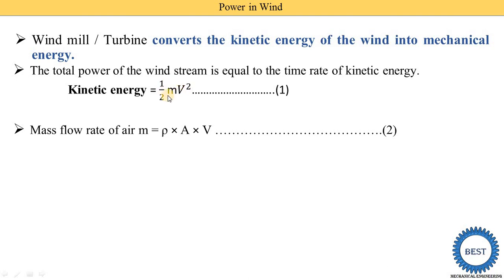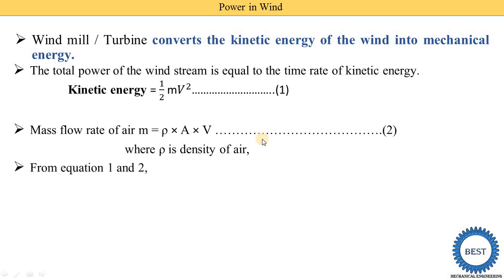Instead of m, we can write the mass flow rate of air as: m = ρAV, where ρ is density, A is area, and V is velocity. This is equation number 2. We now substitute this value of m into equation number 1.